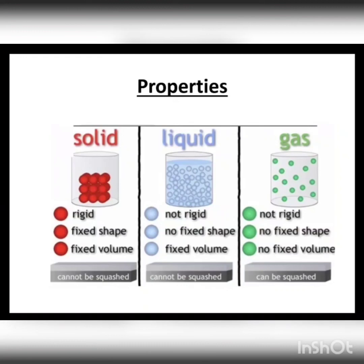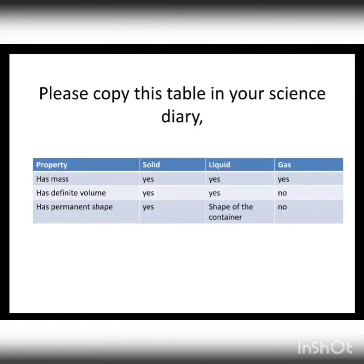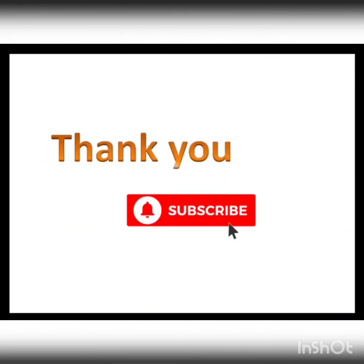I think you understand the class. You should write all the notes in your science diary. Copy the table from your textbook into your science diary and try to understand it yourself. Then check: which property — mass, definite volume, permanent shape — applies to solid, liquid, and gas? If you have any doubt, ask in the comment box.